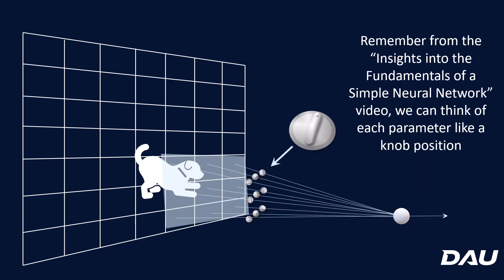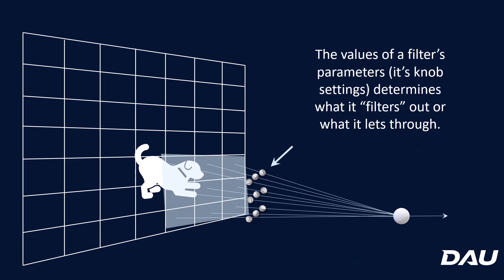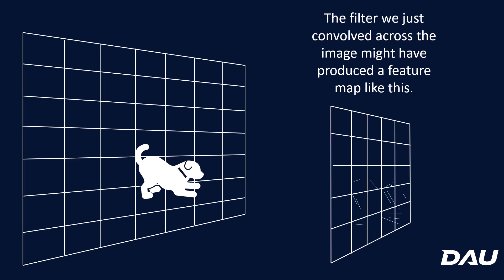Each connection to the neuron has a parameter — a synaptic weight — that we can think of as a knob. As the network learns, the knob gets adjusted up and down. The output of that filter depends on what those knob settings are, which determines what it's going to filter out or let through. These filter weights stay the same during convolution; they only get changed during training via back propagation to minimize error. Each filter, depending on its parameter settings, filters for different features — one might filter for straight edges, another for curvy edges, another for something like dog paws.